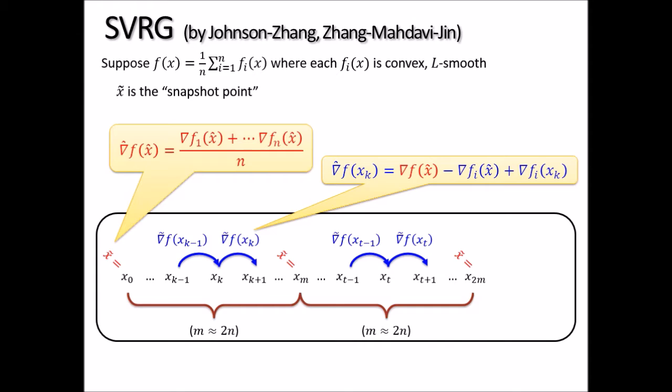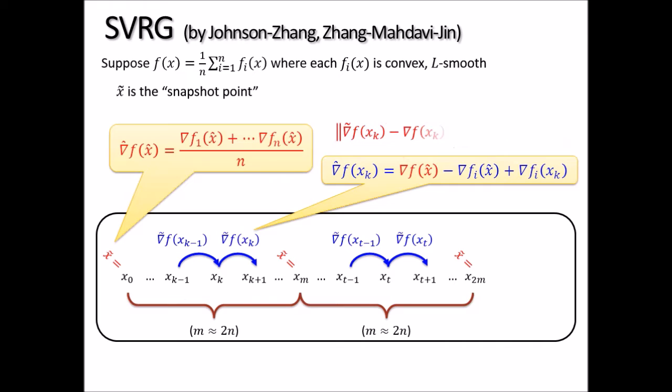Computing the full gradient takes a long time, but don't worry — it is only computed very rarely, once per epoch. In each follow-up iteration, SVRG defines the gradient estimator as a correction to the full gradient of the most recent snapshot, which was already stored in memory. This estimator is very good: it is an unbiased estimator of the full gradient, and one can show that its variance approaches zero as we continue minimizing.